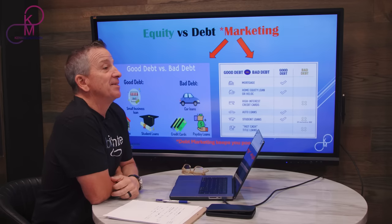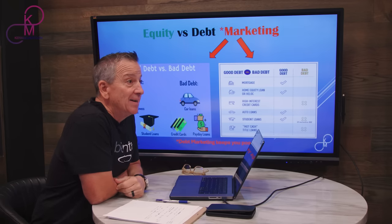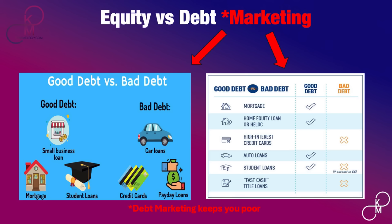Now let's talk about the difference between good debt and bad debt — I call this debt marketing because these categories cannot be further from the truth. On the left side of this slide, they actually list student loans as good debt. I completely disagree because most people right now are in high student loan debt, which is a huge topic all the way up to the presidential candidates. To the right, they're also listing HELOCs or home equity lines of credit and auto loans as good debt, which I would also say are bad debt.